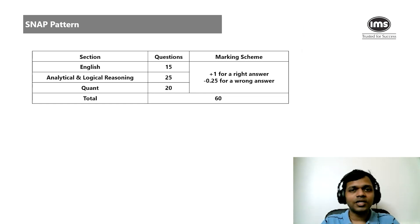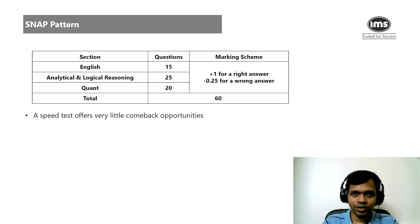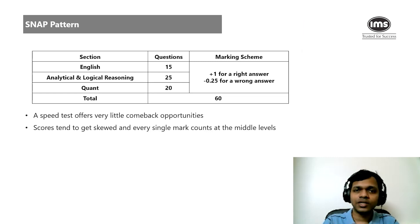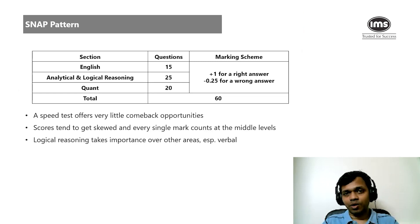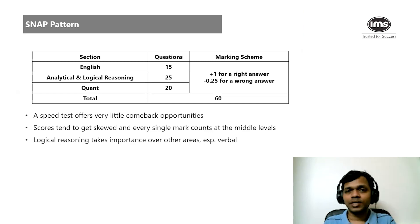Let's understand the implications of a test pattern like this. First, it has very little comeback opportunity — if you spend a lot of time on certain questions, you might not be able to look at the rest. Scores tend to get skewed and every single mark counts a lot. The logical reasoning section is definitely important because you have 25 questions there, which is 10 more than the English section. The English section had no RCs last year, and everything could be answered in about 30 to 40 seconds.